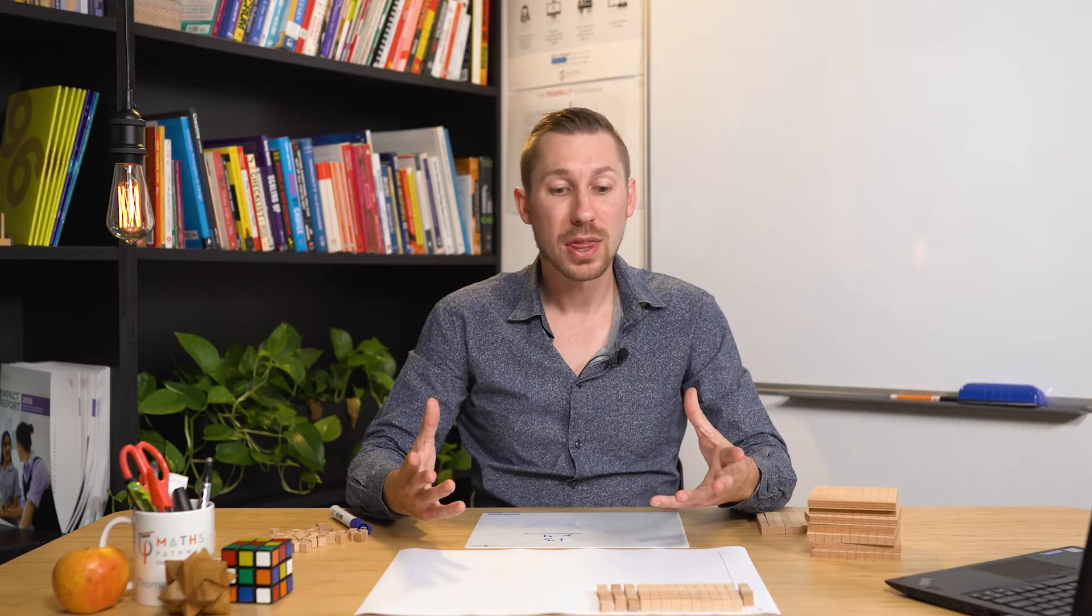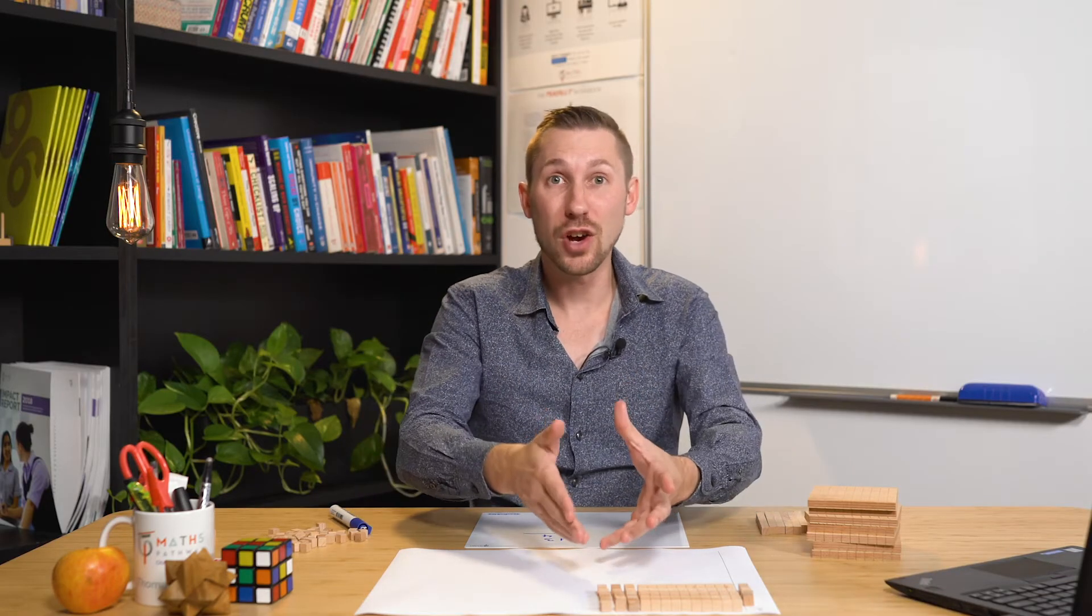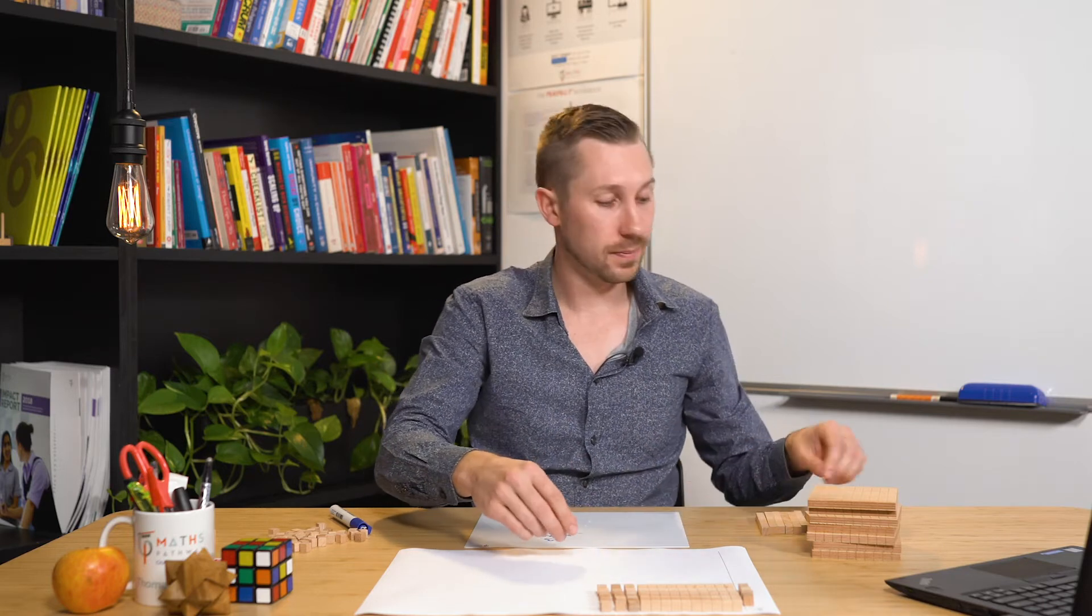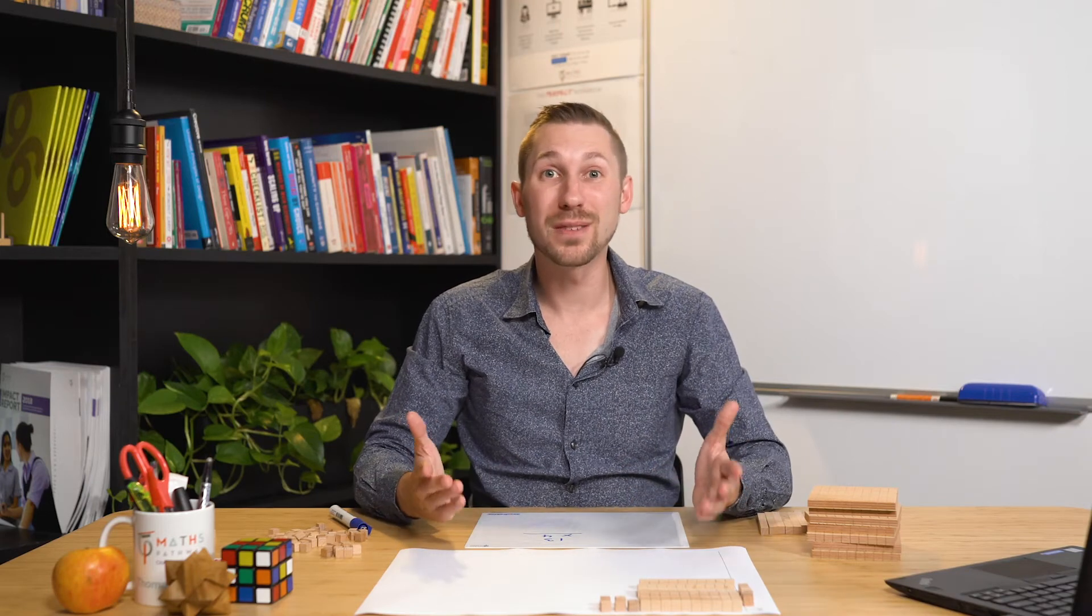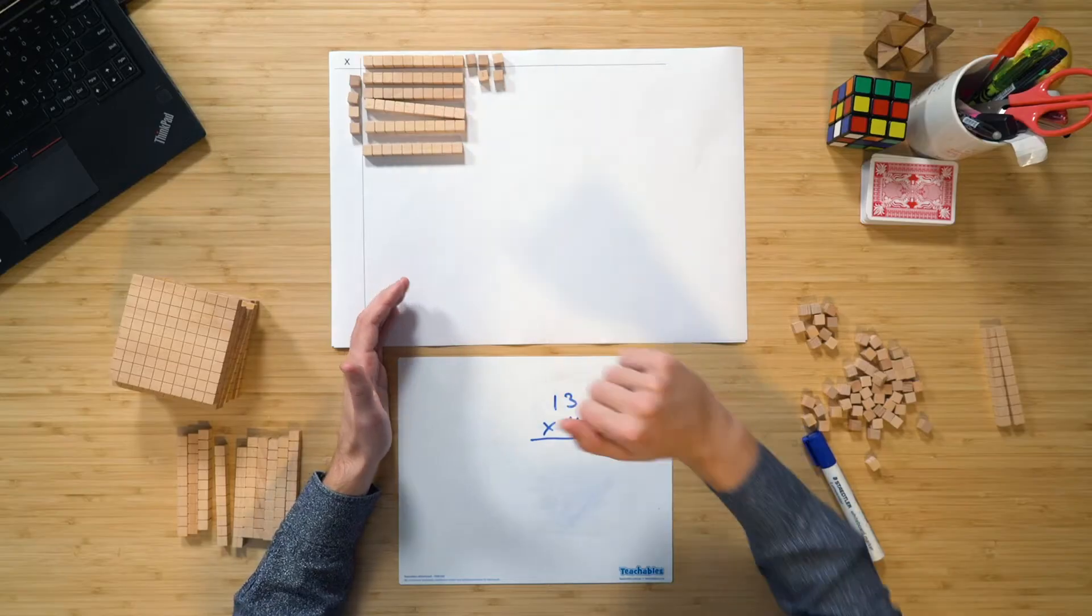Now of course, we need to make sure that we simply go through and change over 10 of the 1s for 1 10. So of course, 4 times 13 will give us 52, that is 5 10s and 2 1s.